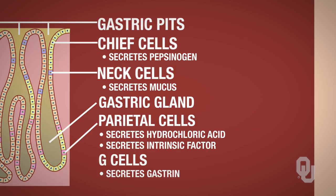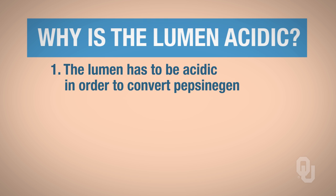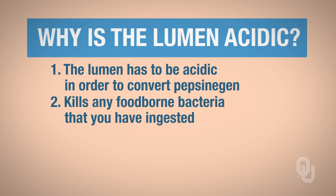Why is the lumen acidic? First, the lumen must be acidic in order to convert pepsinogen — the pepsin precursor — into pepsin. If the lumen is not acidic, pepsinogen will not be converted to pepsin, pepsin will not be active, and you will not be able to break down protein. Second, the acidic environment kills any foodborne bacteria that you've ingested, so bacteria on ingested food is destroyed by the acidic stomach environment.